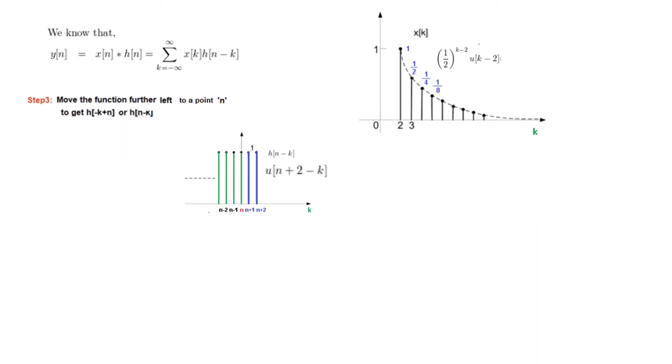So now if you look carefully, we have moved the function to a point n. Now there is no interaction or there is no overlap between the two. And since there is no overlap between the two functions, the convolution sum will be equal to 0. So we can say that for n+2, that is this n+2, less than 2. This is not touching, so that means it is less than 2. No overlap.